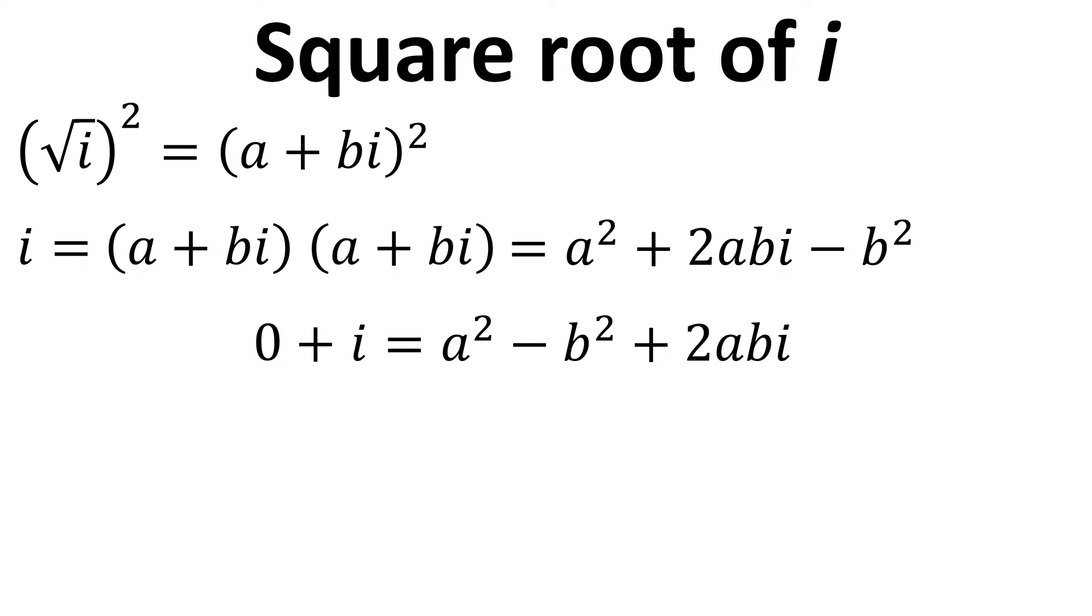Now if we compare the real part on both sides we've got 0 equals a squared minus b squared. If we rearrange by adding b squared to both sides we've got b squared equals a squared, square root both sides we see that b equals a.